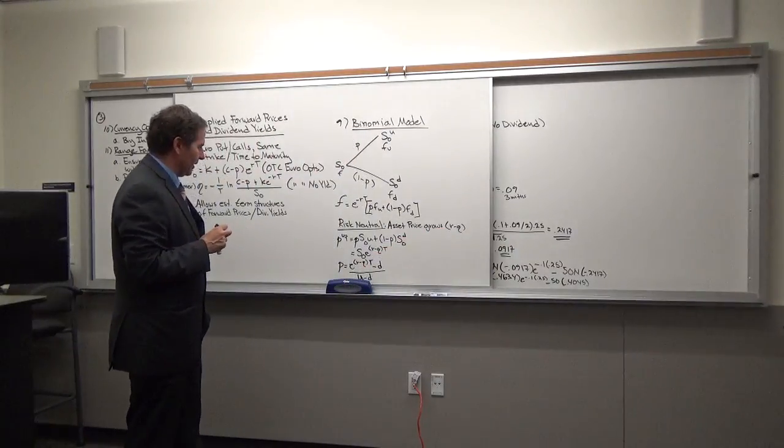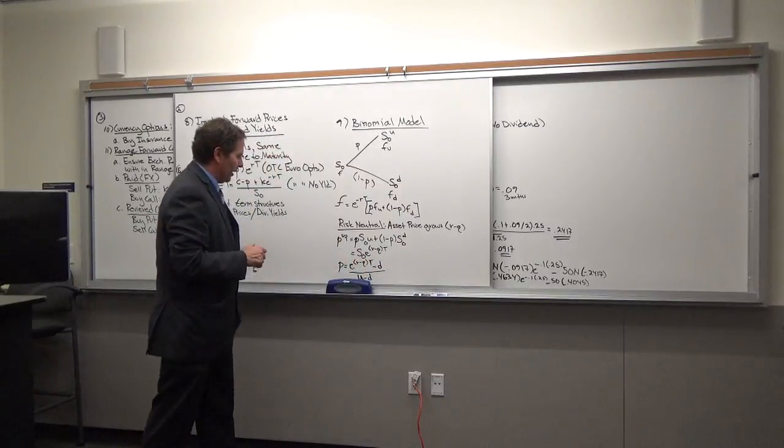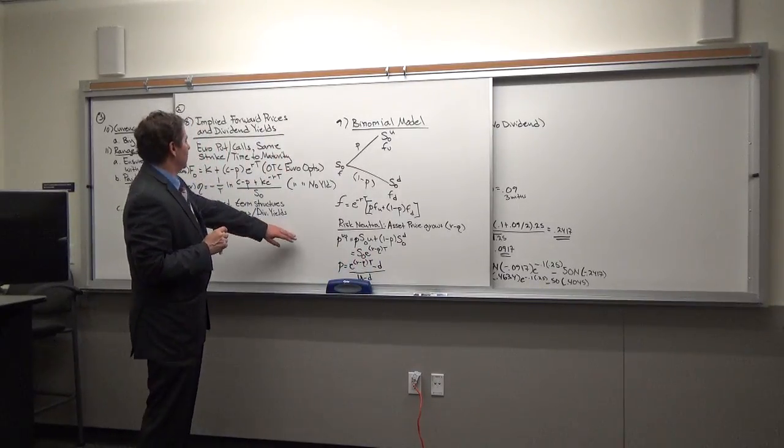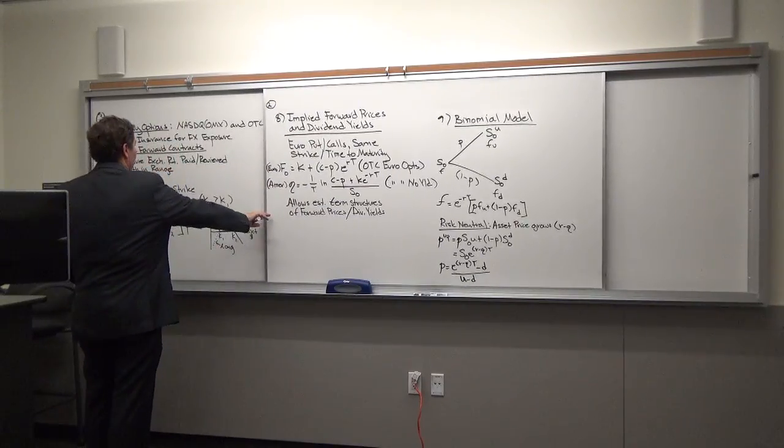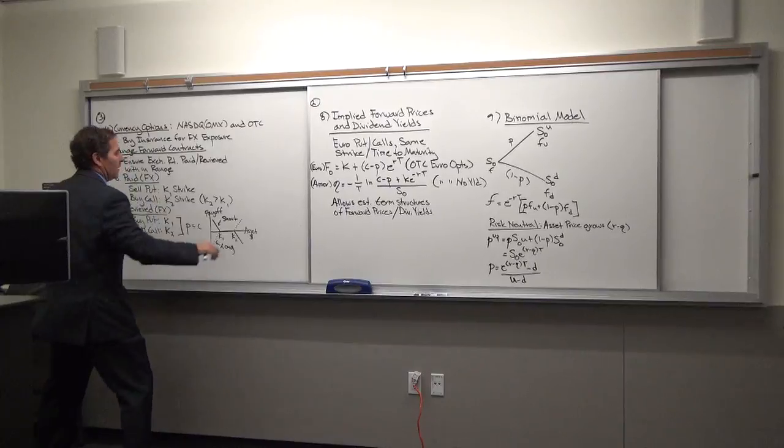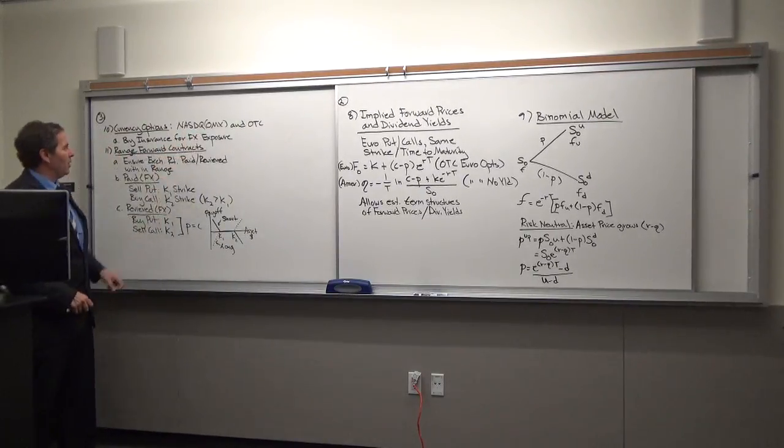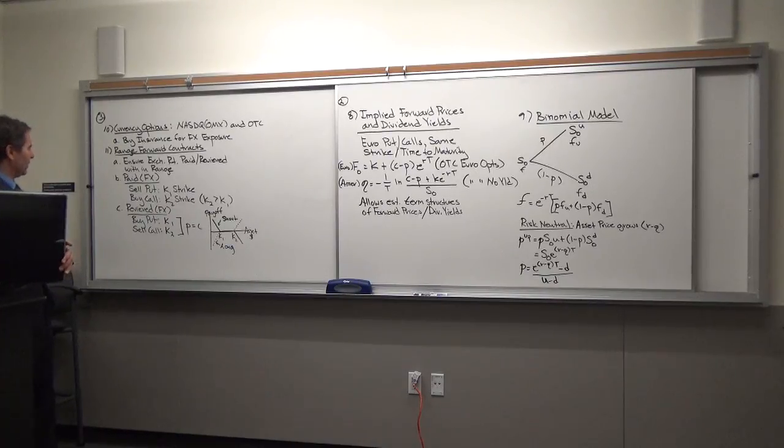And then in a risk-neutral scenario, you're assuming that the asset price is going to grow at some rate, and again you need to adjust for that foreign rate. The yield, currency options, you can use the NASDAQ OMX or you can do an over-the-counter. You can use the currency options to buy insurance to hedge off your foreign currency risk.